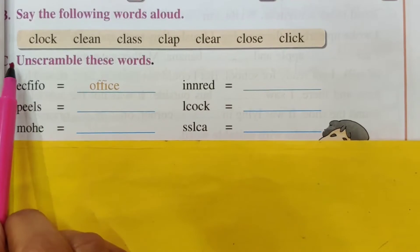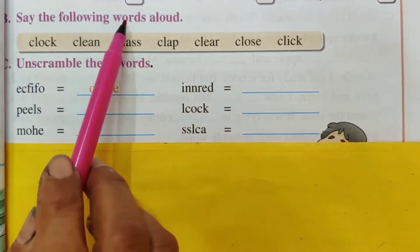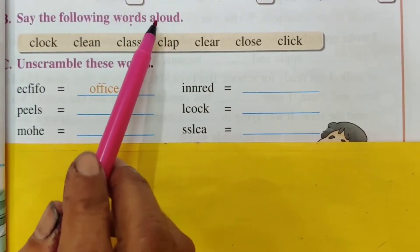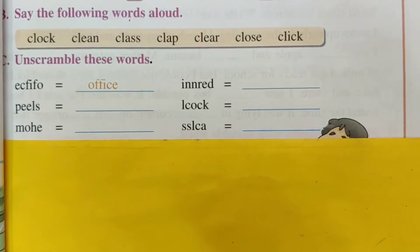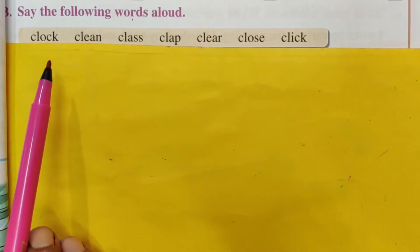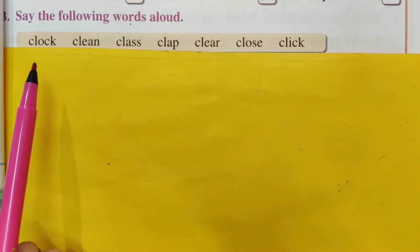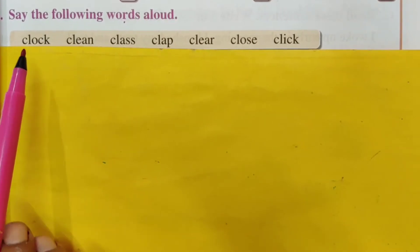Now the second bit. The instruction says: 'Say the following words aloud.' He is asking you to read the words aloud. You have time, so let's go through them.